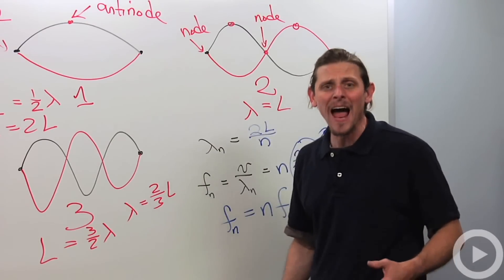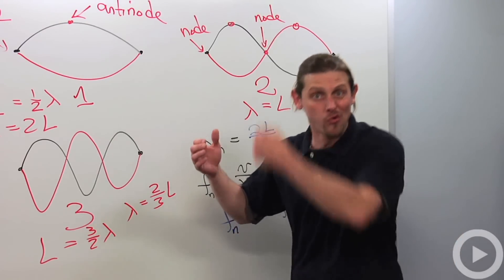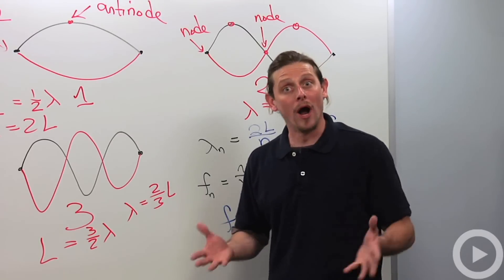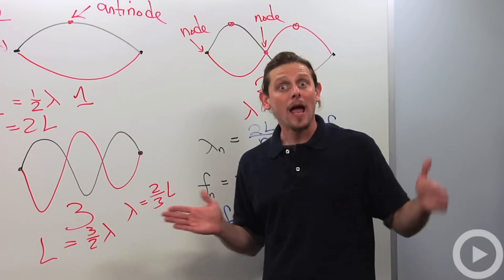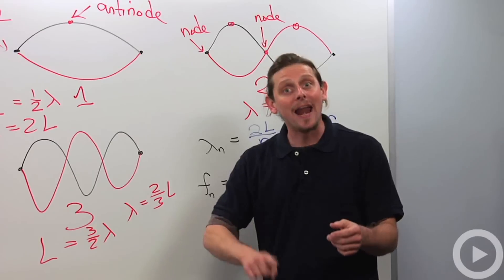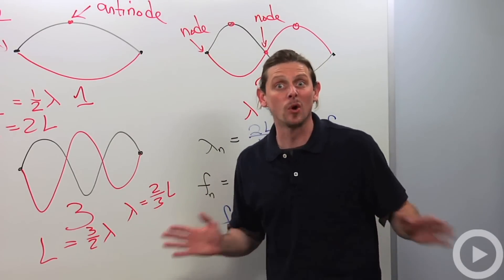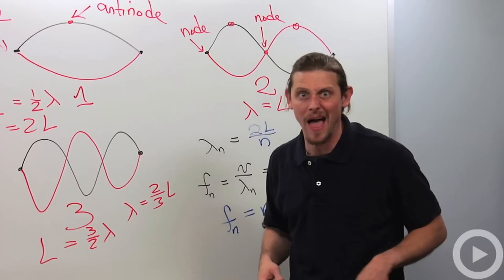If you look at a bass, it has really long strings and it's really low sounding. Whereas if you look at a violin, it's got much shorter strings and it has a much higher pitch. Same thing happens with the woodwind instruments, but we'll talk about that later.